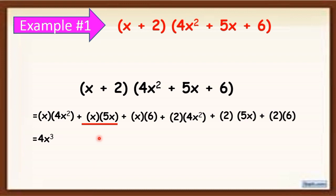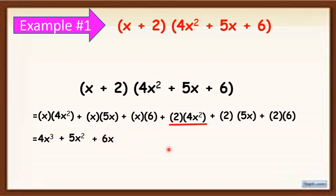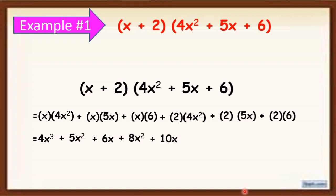x times 5x is equal to 5x squared. x times 6 will become 6x, and 2 times 4x squared will become positive 8x squared. And 2 times 5x is equal to 10x, and 2 times 6 is equal to 12.